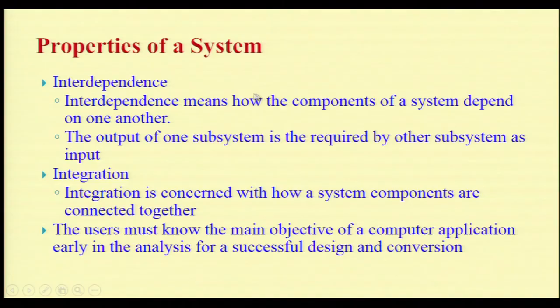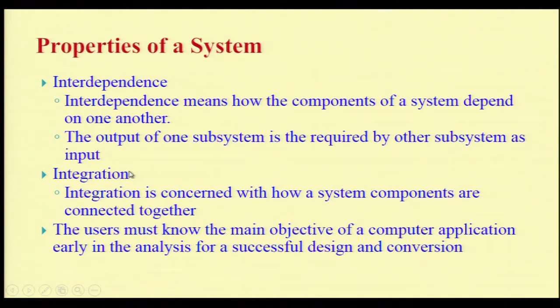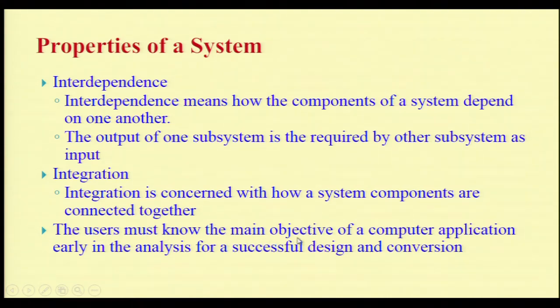Continuing with the properties of a system — interdependence means how the components of a system depend on one another. The output of one subsystem is required by another subsystem as input. Integration is concerned with how system components are connected together. The users must know the main objective of a computer application early in the analysis for the successful design and implementation.